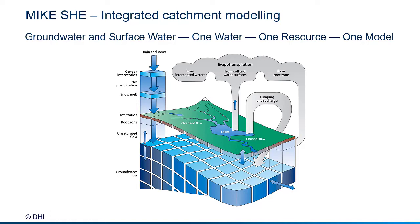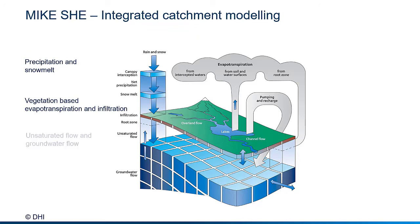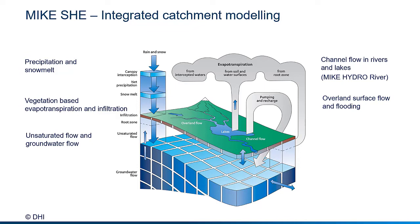It covers the freshwater part of the hydrological cycle, including precipitation and snow melt, evapotranspiration and infiltration, unsaturated flow and groundwater flow, channel flows in rivers and lakes through coupling with MIKE Hydro River, overland surface flow and flooding, and demand driven irrigation.